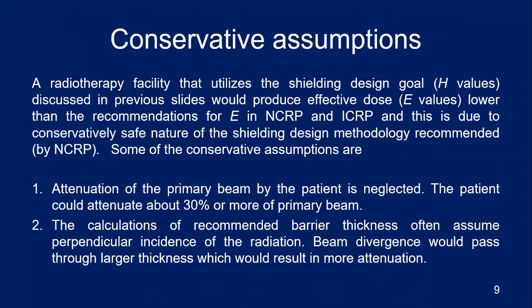We will now discuss conservative assumptions made when designing a radiotherapy facility. Because of these conservative assumptions, the final effective dose at shielded areas will be lower than the shielding design goals of 0.1 mSv per week for controlled areas and 0.02 mSv per week for uncontrolled areas. First, the attenuation of the primary beam by the patient — about 30% or more — is not taken into account. Second, barrier thickness calculations assume a straight perpendicular radiation beam rather than a diverging beam.